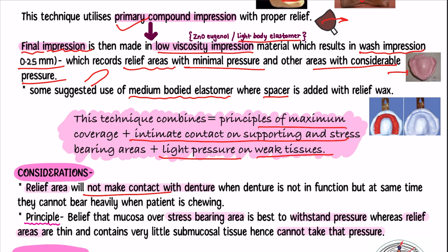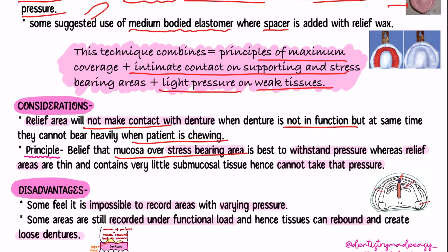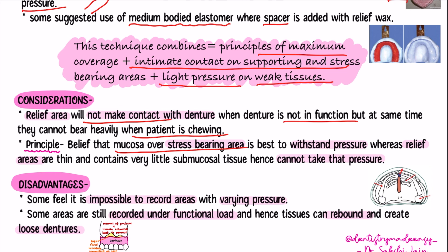Relief areas do not make contact with the denture at rest, so unnecessary pressure is not applied. The principle behind this theory is that the mucosa over the stress-bearing areas is best able to withstand pressure. The relief areas, on the other hand, are very thin, contain very little submucosal tissue, and cannot take that pressure — so it is better to relieve those areas.